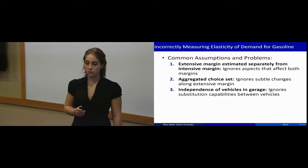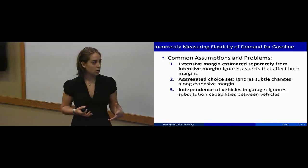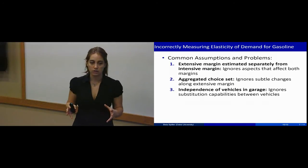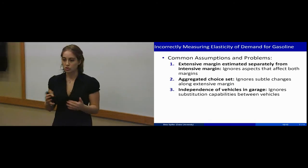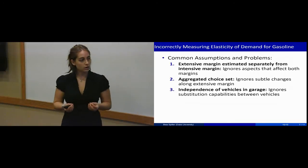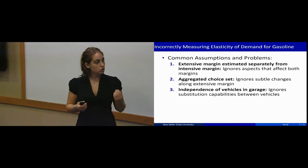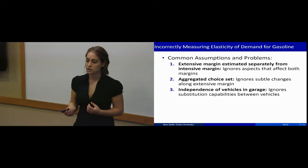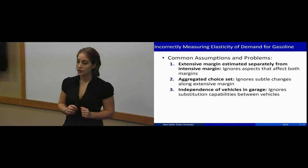The third thing I'm going to be doing is modeling the vehicles in the household's garage as being dependent on each other. Many researchers choose to model these vehicles as independent because it facilitates estimation. However, this ignores the capability of households to substitute between the vehicles in the garage as relative operating costs change.